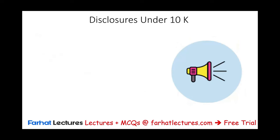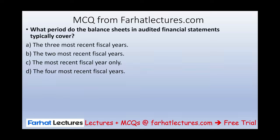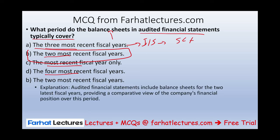There is a long list of disclosure requirements for the 10K — practically everything gets disclosed there. Let's look at an MCQ testing this concept: what period do the balance sheet and audited financial statements typically cover? For the balance sheet, you need the two most recent fiscal years. For the income statement and statement of cash flows, you need the three most recent fiscal years. This is a memory question that could be an easy point on the CPA exam.